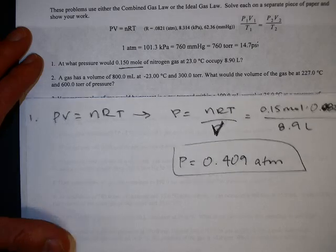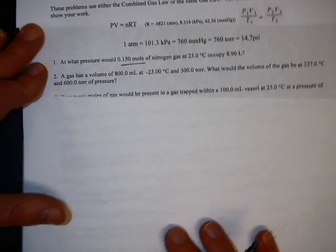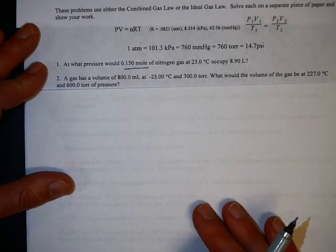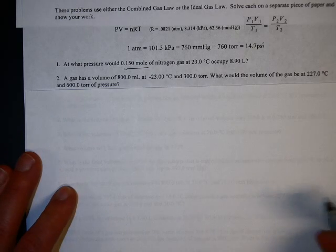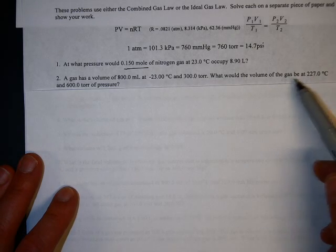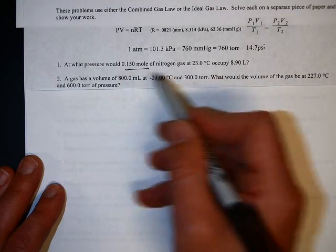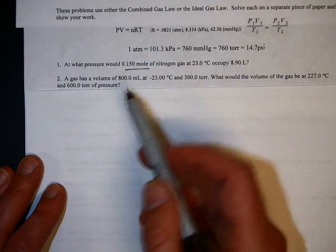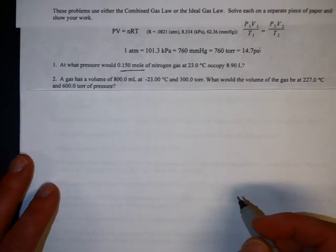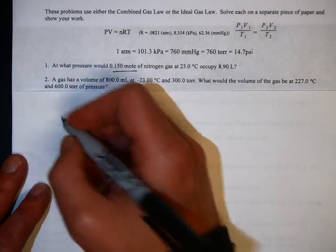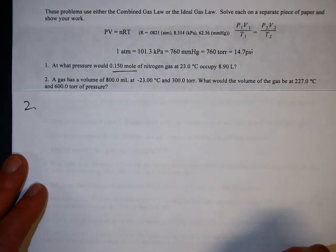Number two says the gas has a volume of 800 milliliters at negative 23 degrees Celsius and 300 torr. What would the volume of the gas be at 227 degrees Celsius and 600 torr of pressure? You got a before and after picture here. There's no mention of moles or grams, so you know you're doing a combined gas law problem.